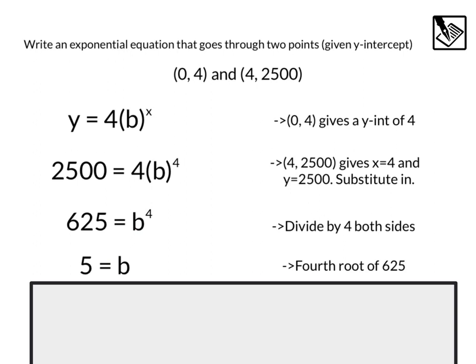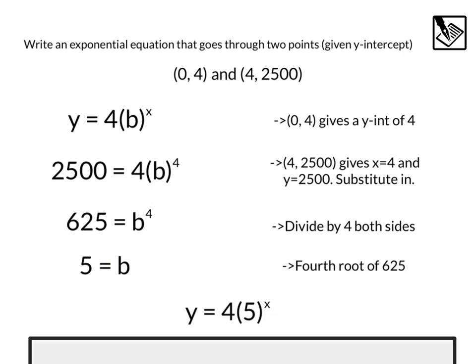Finally, when we know the value of a, we know the value of b, we can get our final answer, which is going to be y equals 4 times 5 to the x power. That's our equation. It goes through our y-intercept at 4, and it's going to pass through that other point as we substitute that in and solve for b. So there we are, y equals 4 times 5 to the x power.